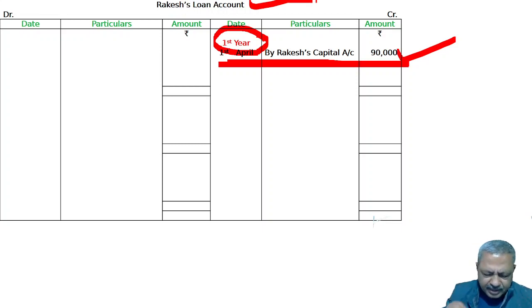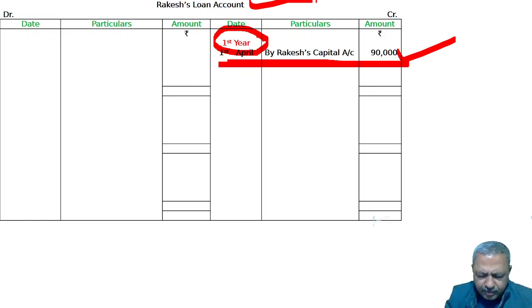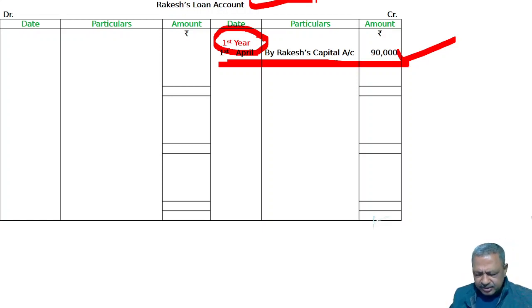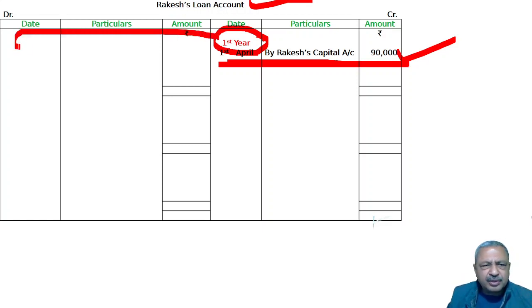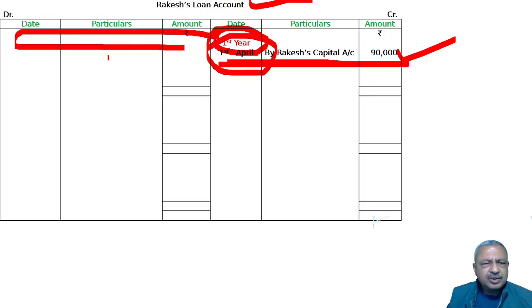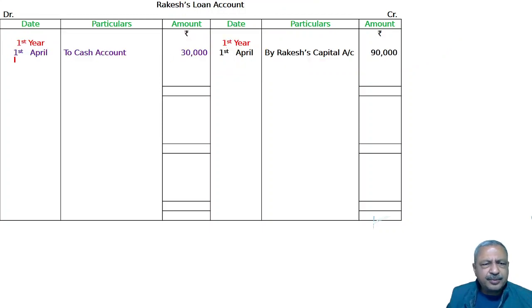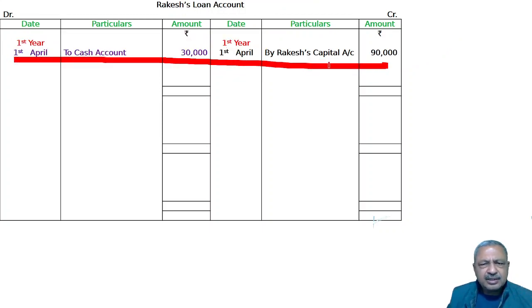Immediately, 30,000 was paid. The payment was decided as follows: on the date of retirement, 30,000 is paid to cash — 30,000 to cash. This is on the same day, same date, same year.